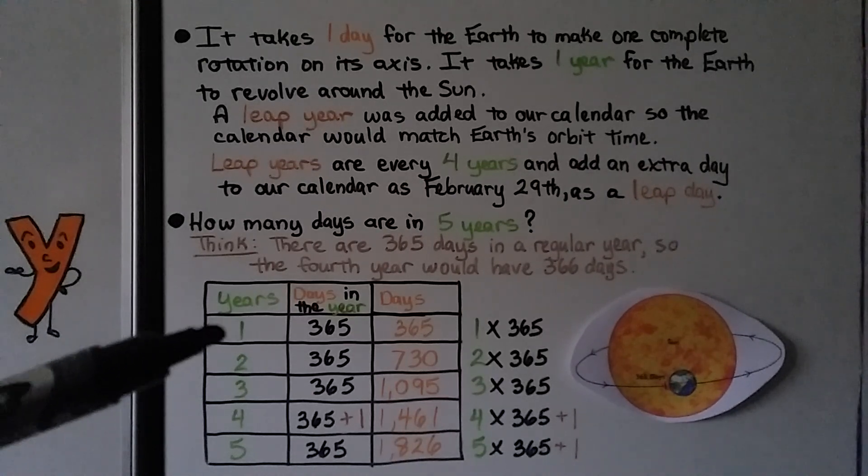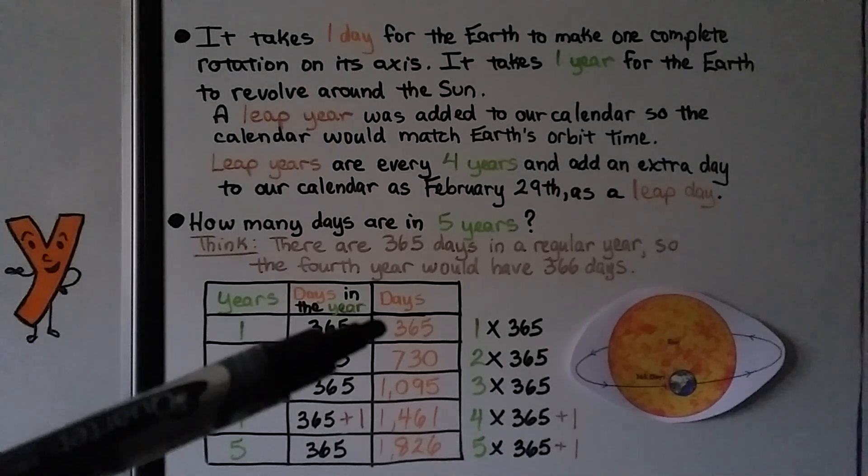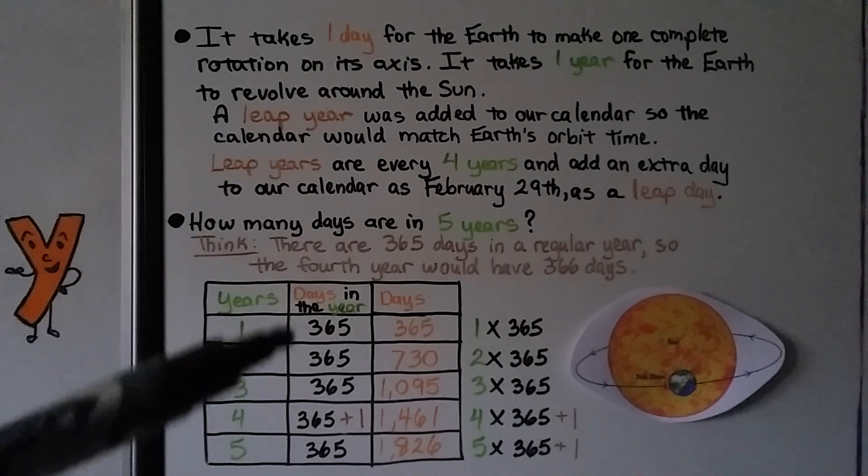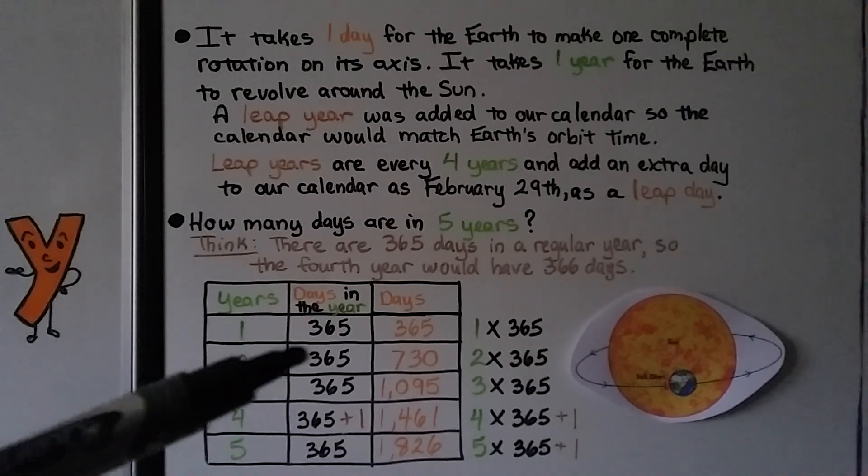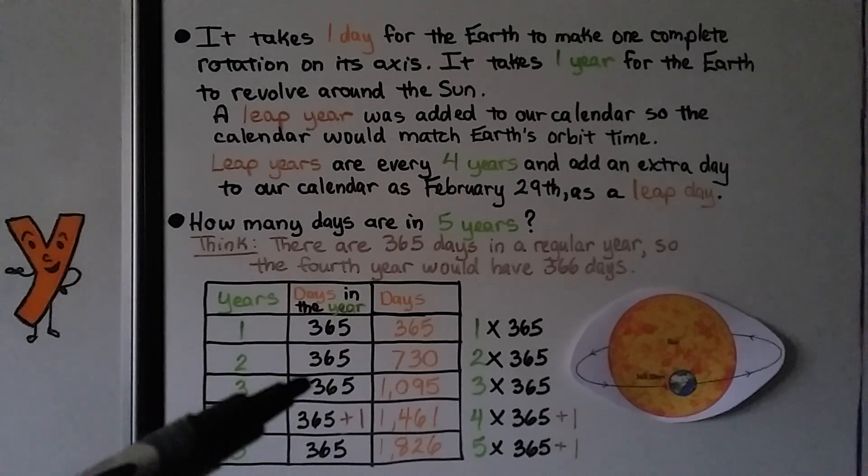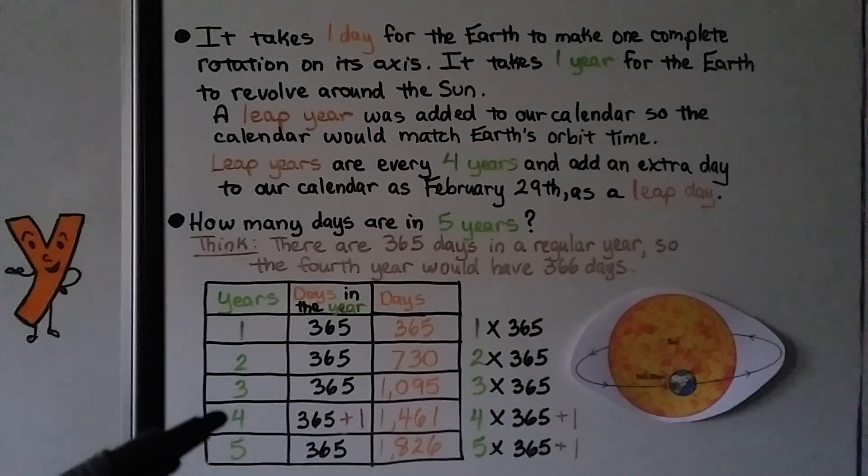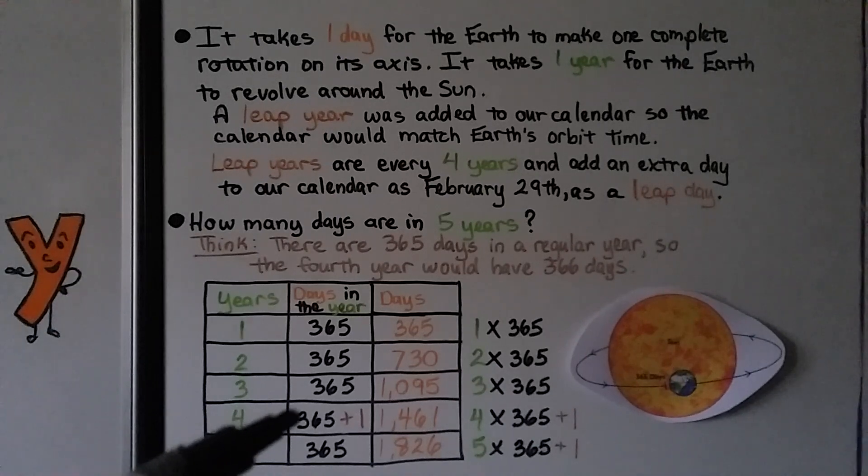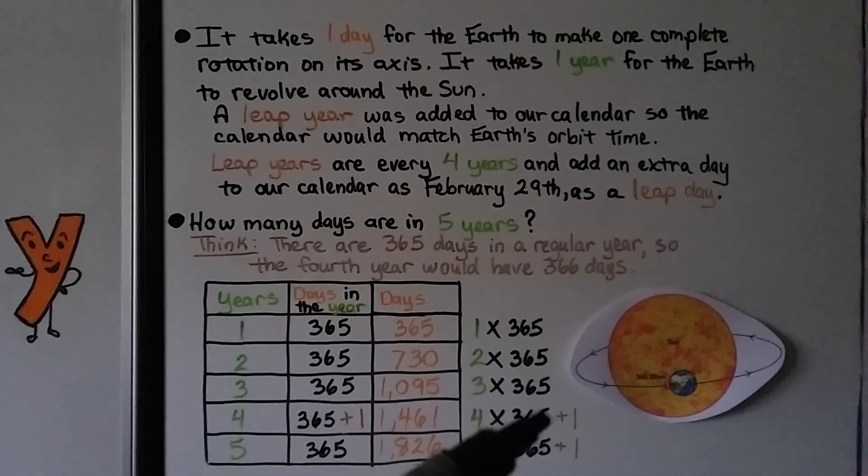We can make a table showing 1 year is 365 days. So that would be 365 days, 1 times 365. We can do 365 times 2. That would be 2 years times the 365. That would be 730 days. And we can do 3 years times the 365. That would give us 1,095 days. And when we get to that 4th year, we have to do the 365 plus that one more day. So we would do 4 years times the 365 days in a year, plus that one extra day.